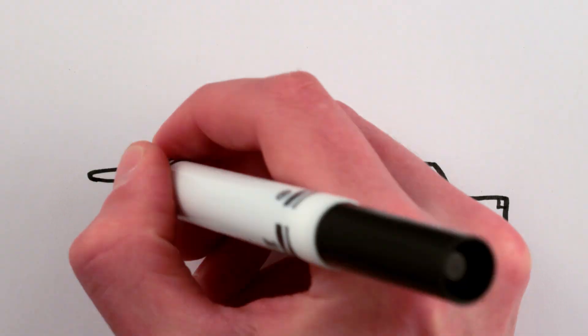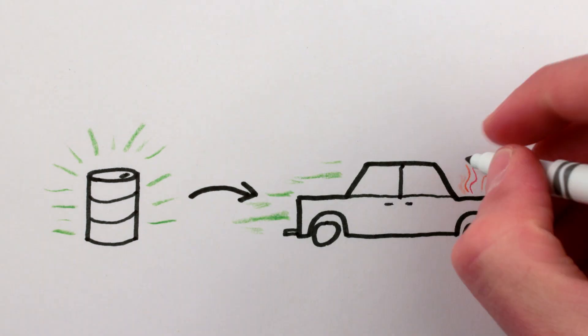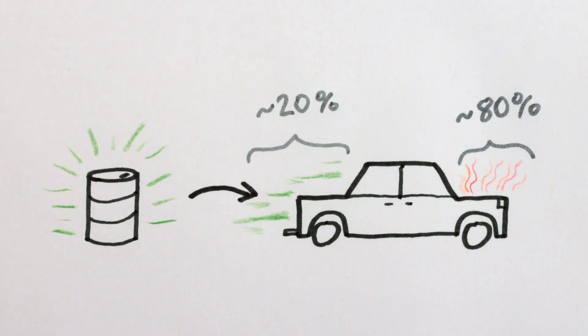Cars work by burning gasoline to convert that chemical energy into the kinetic energy of motion of the car, though almost 80% of it is lost as heat in the engine.